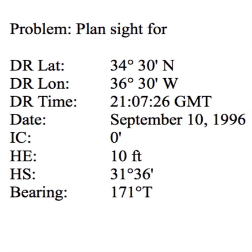So let's get started. Today we're going to focus on a specific problem from the StarPilot manual. This particular problem is in the section on Star/Planet ID. The specific problem is to ID a body found at altitude 31-36 degrees with a bearing of 171, at the given DR position at that given date and time GMT. We'll also use the same data to view some of the other site planning features. You might want to record this information or print out this page or do a screen capture so that you have this particular problem available as we work through the different problem sets in the StarPilot.